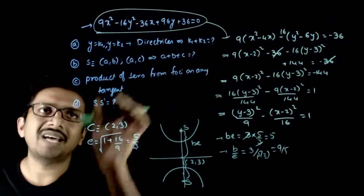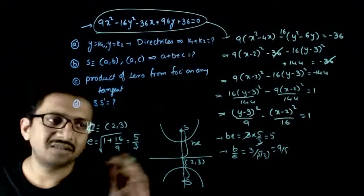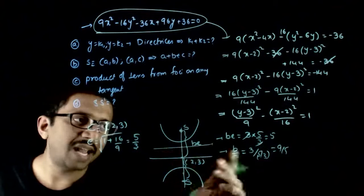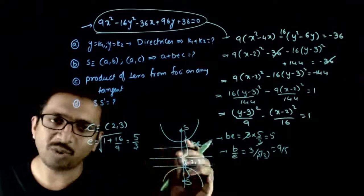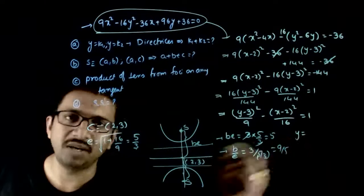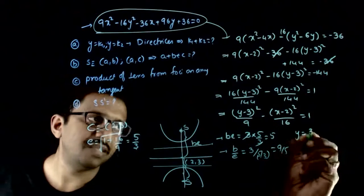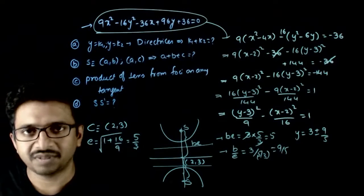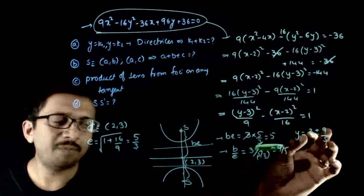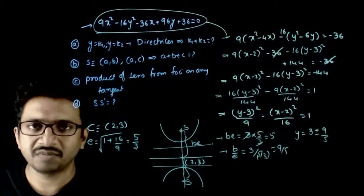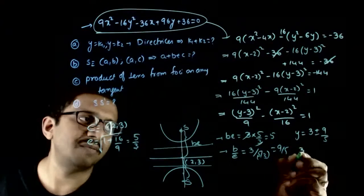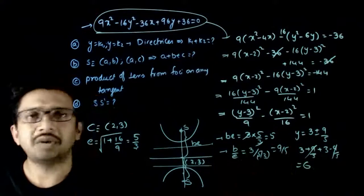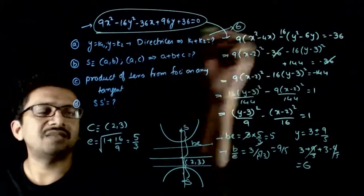For the first question: what are the directrices? To get the directrices, we go a/e units up and down from the center (2, 3), that is 9/5 units up and down. So the directrices are y = 3 ± 9/5. If the two directrices are y = k1 and y = k2, then k1 = 3 + 9/5 and k2 = 3 − 9/5, so k1 + k2 = 6. That is the first answer.